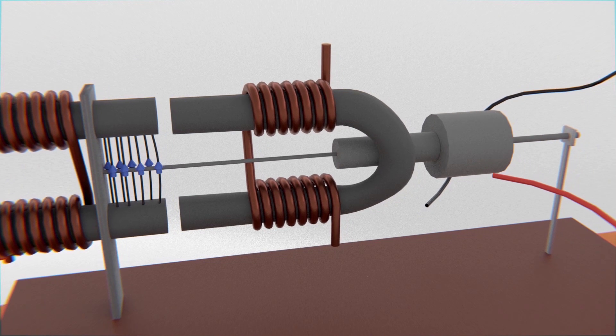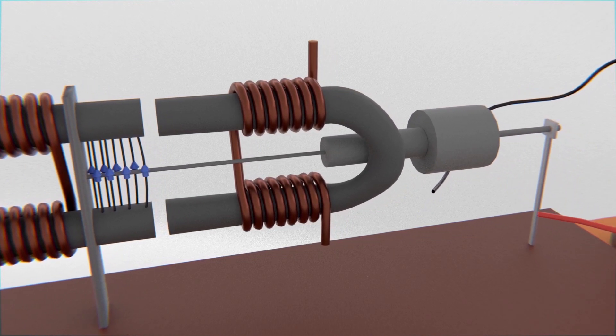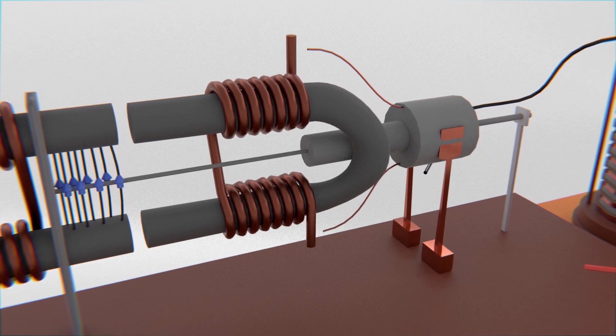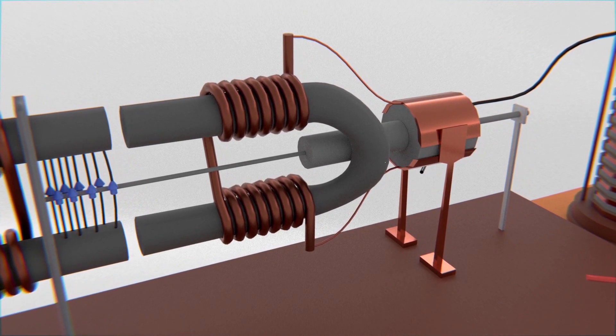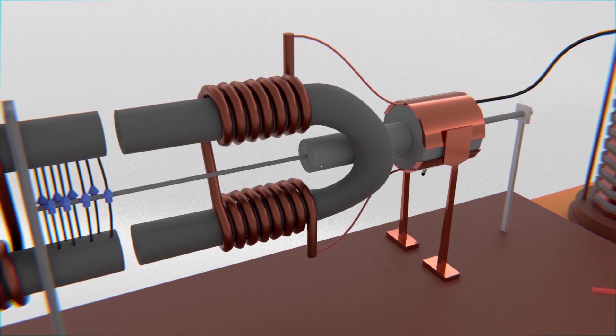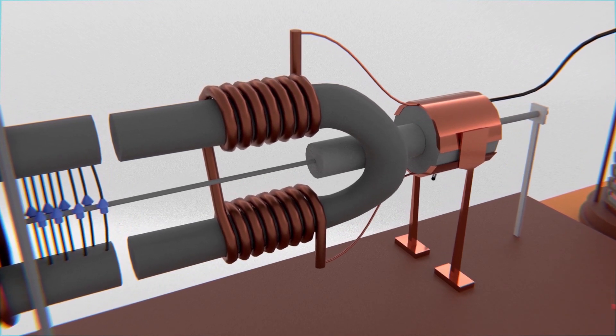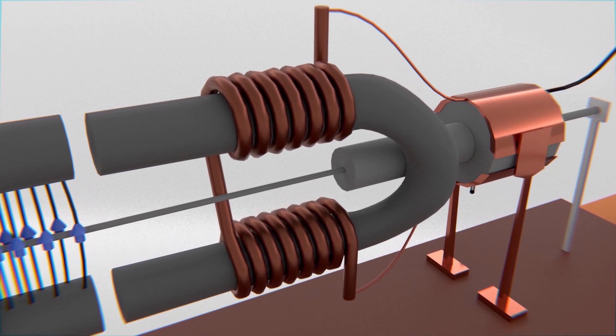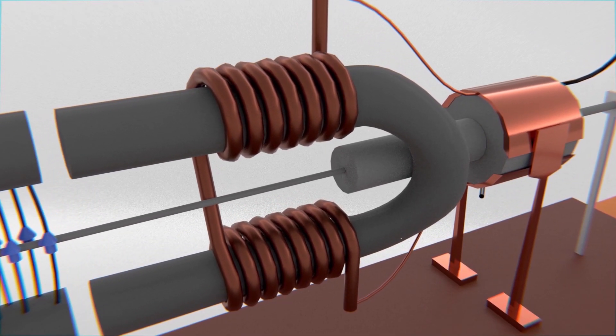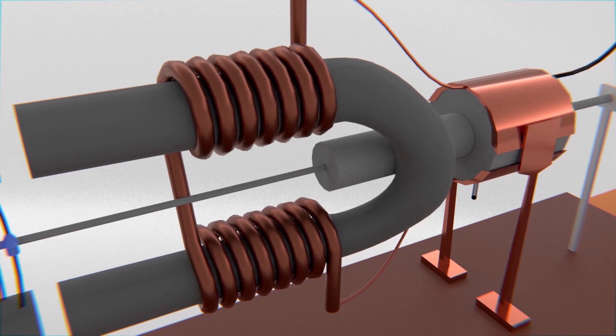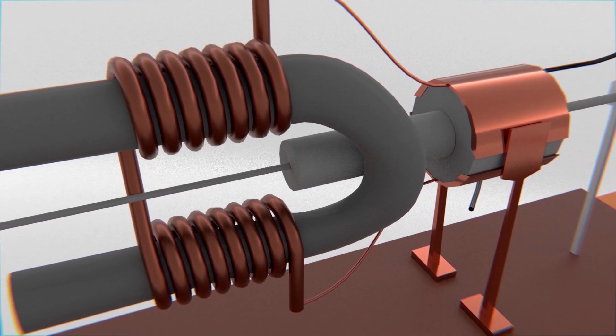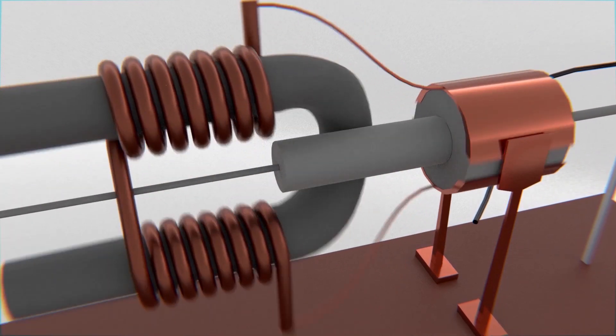And it's precisely here where the second great contribution of William Sturgeon comes. In 1832, he invented the commutator, which consisted in making the axis responsible for reversing the direction of the current that passes through the electromagnet. To achieve it, he connected the electromagnet cables to two plates that surrounded the shaft, but without them making contact with each other, which also were connected to the direct current source only by pressure, meaning it could rotate freely.